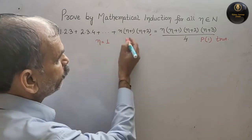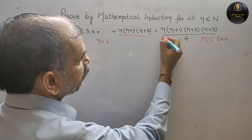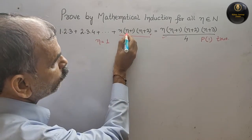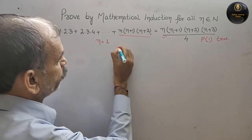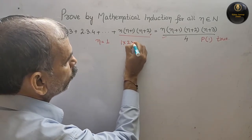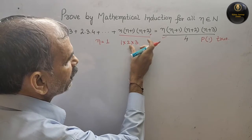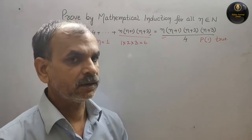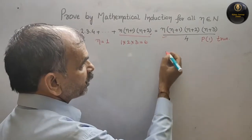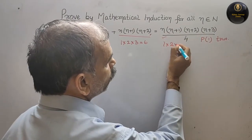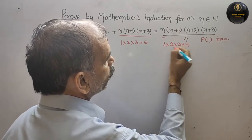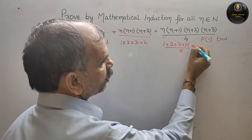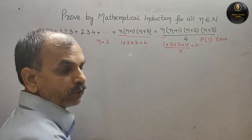Substituting n = 1 into the LHS: 1·(1+1)·(1+2) = 1·2·3 = 6. For the RHS: 1·2·3·4 / 4 — the 4s cancel — giving 6 as well. So LHS = RHS = 6, and P(1) is true.